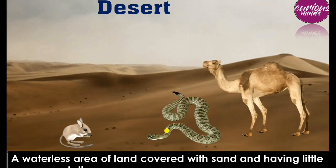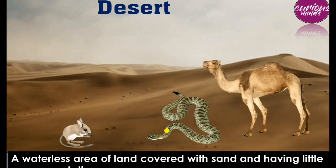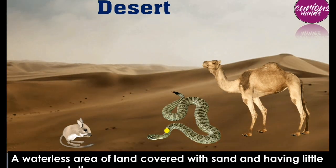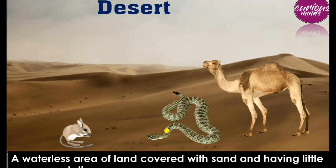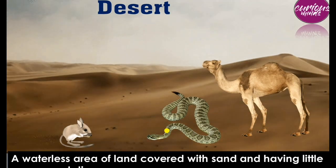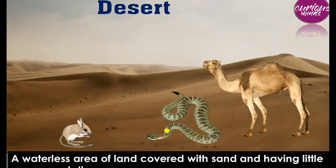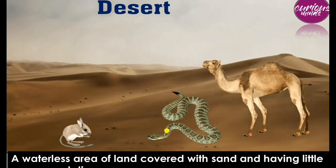Camels are desert animals. Their body color is quite light so that they absorb less heat and reflect more heat, protecting them from the desert heat. Their legs are cushion-like, which makes it easy for them to walk in the desert.